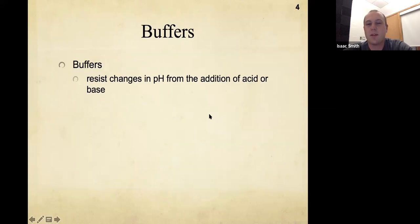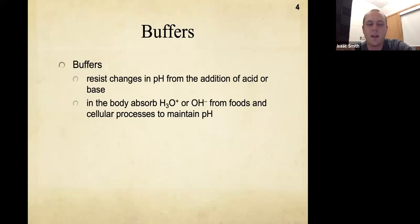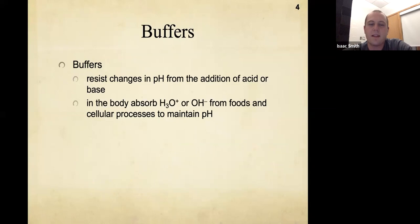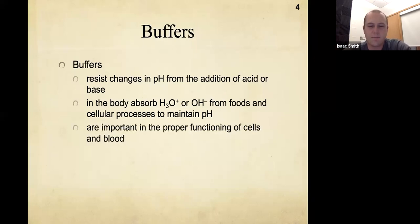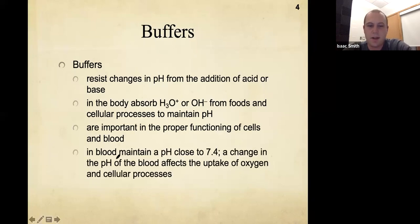Buffers resist changes in pH from the addition of an acid or a base. Basically, they will absorb any hydronium, protons, or hydroxide from foods, drinks, and different cellular processes. There are cellular processes in the body that can produce acid or base, but these buffers absorb those in order to maintain a balanced pH. This is important for the proper functioning of cells and blood. The blood maintains a pH close to 7.4.